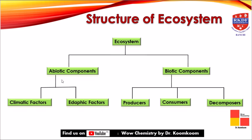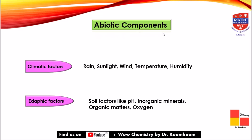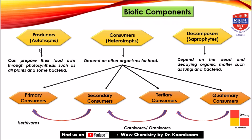Moving to the structure of ecosystem, it is composed of abiotic components meaning the non-living components, and biotic components meaning the living components. The abiotic components are further classified as climatic factors and edaphic factors. The list of abiotic components includes climatic factors such as rain, sunlight, wind, temperature, and humidity, and edaphic factors including soil factors such as pH, inorganic minerals, organic matter, and oxygen.